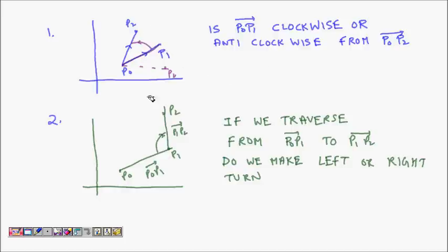The second question: given p0p1 as one line segment and p1p2 as another, when we go from p0 to p1 and then from p1 to p2, do we make a left turn or a right turn? For example, going in one direction makes a left turn, and if p2 is on the other side, it would be a right turn.